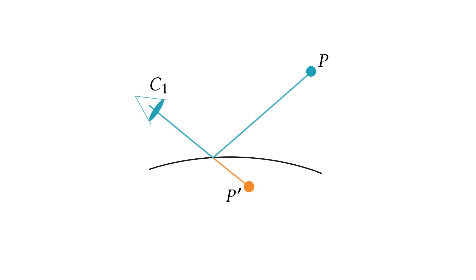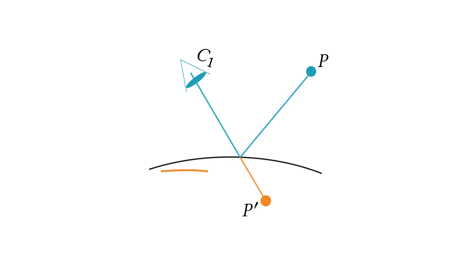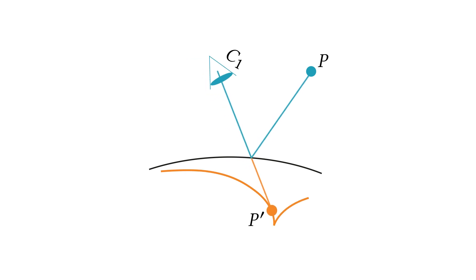For curved reflectors, camera motion leads to P' tracing a surface called the caustic. The caustic surface for a single point P is defined by the envelope of virtual reflected rays.